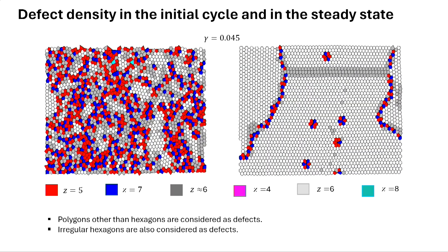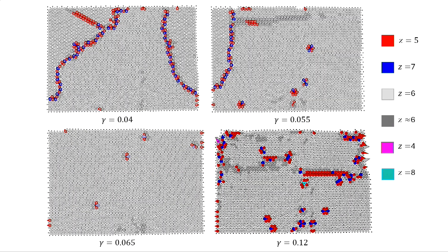At gamma = 0.65, you actually have a monocrystal - a single crystal. Below that, grain boundaries remain. With very small gamma you don't explore much and fail to anneal defects. At very large gammas you get lots of defects. There's a specific optimal shaking amplitude for producing a single crystal.